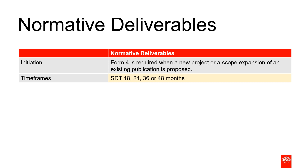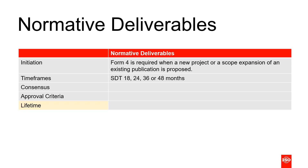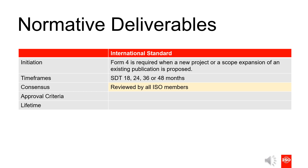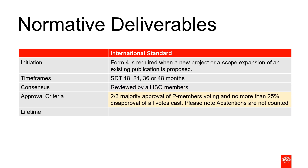While the international standard, technical specification, and publicly available specifications are all normative documents, they are rather different when it comes to consensus, approval criteria, and shelf life. International standards require the highest level of consensus for publication. When a draft developed by a committee is mature enough for review, the draft international standard text will be released to all ISO member bodies, not just the members of a committee. For the DIS text to be approved, the criteria calls for a two-thirds majority approval of P members voting and no more than 25% disapproval of all votes cast. Please note that abstentions do not count toward the approval criteria.